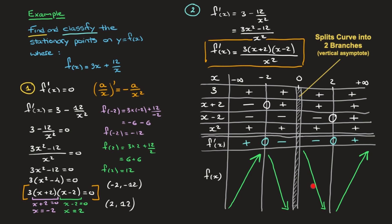These arrows help me quickly classify each stationary point. The stationary point at x equals negative 2 shows an upward arrow then a downward arrow, so it's a maximum — I write max in the table and label the coordinates (−2, −12) as a maximum. The stationary point at x equals 2 shows a downward then upward arrow, so it's a minimum — I write min and label (2, 12) as a minimum.